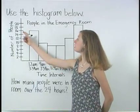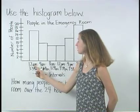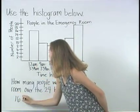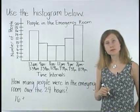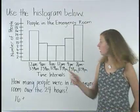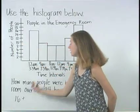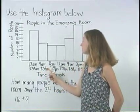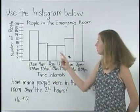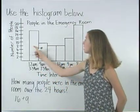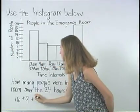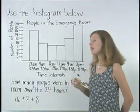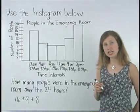Notice that there were 16 people in the emergency room between 12 a.m. and 3:59 a.m. Then there were 9 people in the emergency room between 4 a.m. and 7:59 a.m. Next, there were 8 people in the emergency room between 8 a.m. and 11:59 a.m.